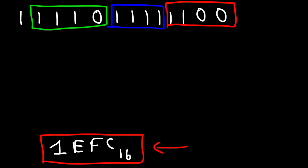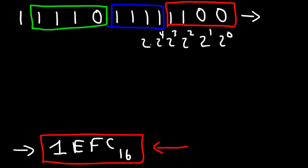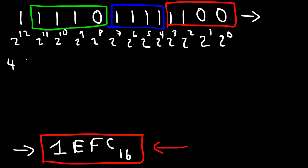Now to make sure that we have the right answer, let's convert the binary number and the hexadecimal number into a decimal value and make sure they're the same. Starting with the binary number, we label positions as 2 to the 0, 2 to the 1st, 2 squared, 2 to the 3rd, 4th, 5th, 6th, and so forth. We have a 1 associated with 2 to the 12th, so 1 times 2 to the 12th is 4,096.